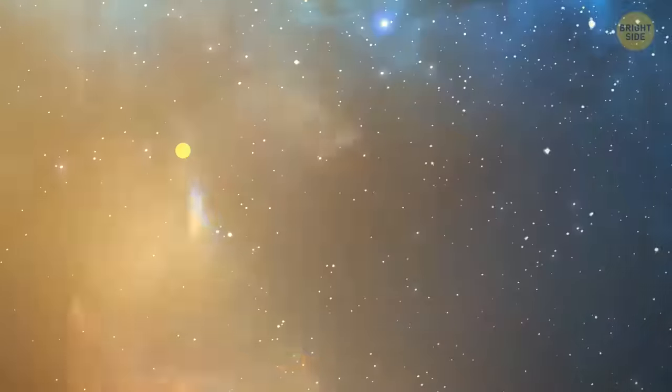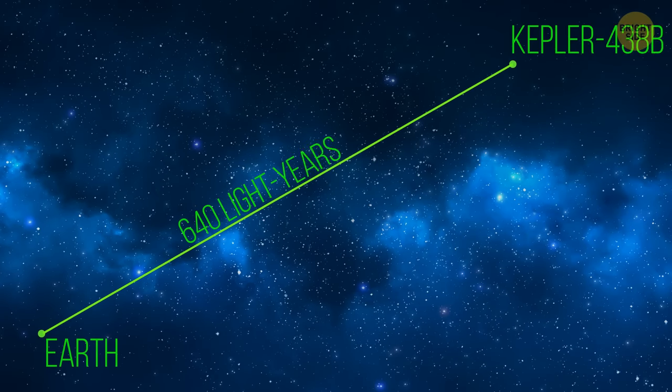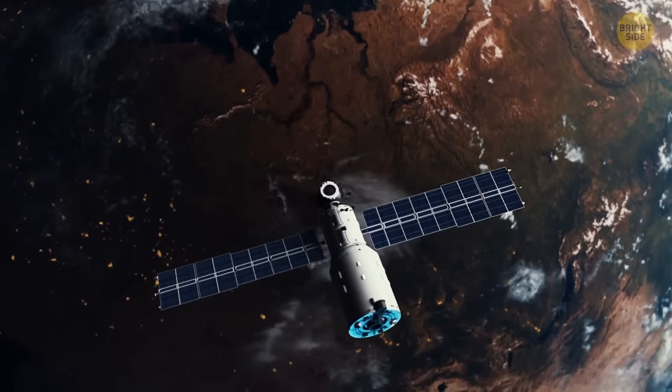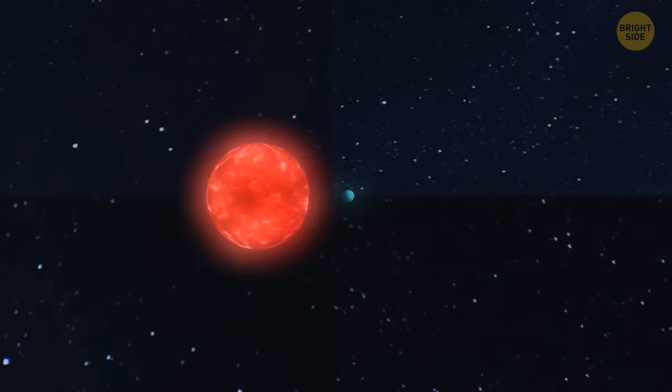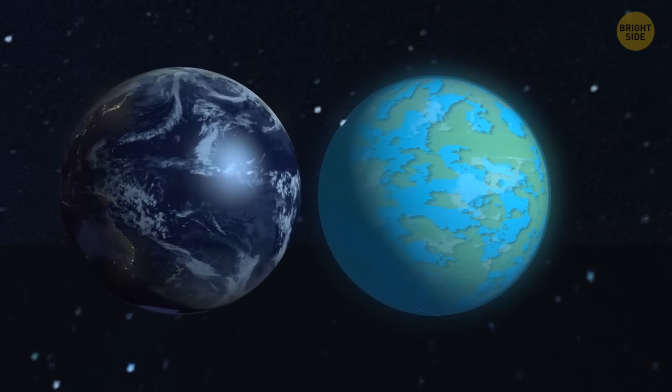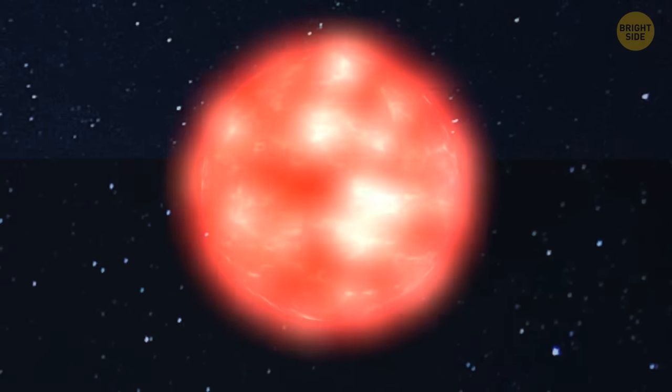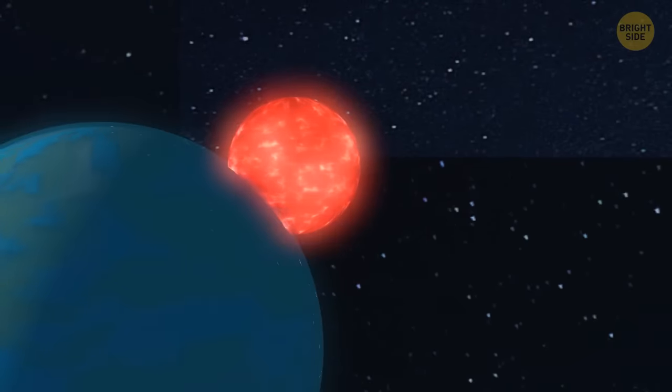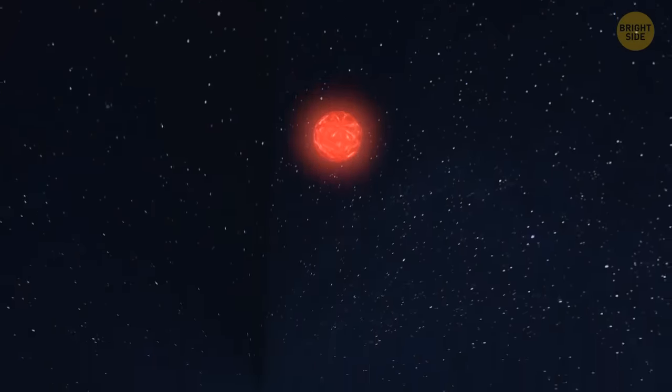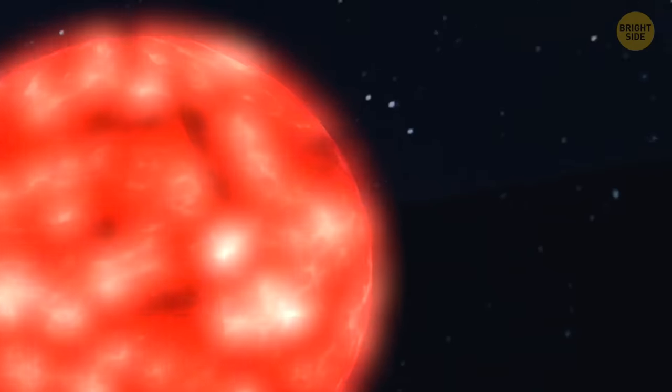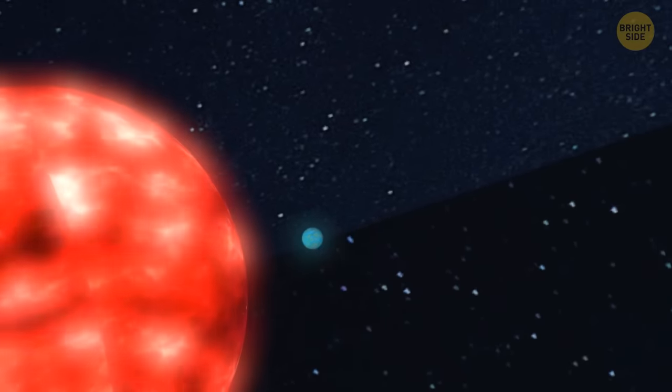Kepler-438b. Kepler-438b is an exoplanet located approximately 640 light-years away from Earth in the constellation Lyra. It was discovered in 2015 by the Kepler Space Telescope. One of the most interesting things about Kepler-438b is its size and location. It's about the same size as Earth and also orbits within the habitable zone of its star. But there are a few catches. For one, Kepler-438b orbits around a red dwarf star, which are known for their high levels of solar radiation and flare-ups. This could make the surface of the planet too hostile for life as we know it. In addition, Kepler-438b has a much shorter year, only around 35 Earth days long. This could lead to extreme temperature fluctuations on the planet's surface.